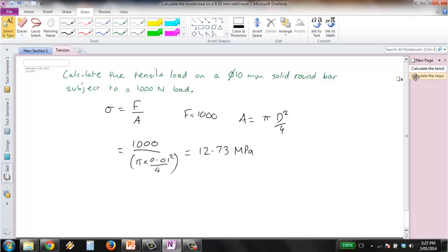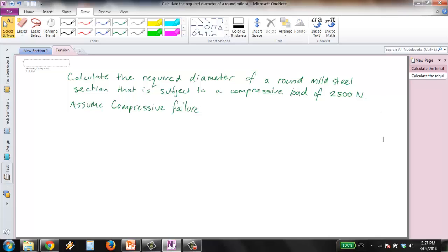What you might more want to look at is a question like this, where we want to calculate the required diameter of round mild steel section that is subject to a compressive load of 2500 N. So what we do is we'll use stress, and this time we'll use a yield stress. So stress yield equals F on A. We know here that F equals 2500 N.